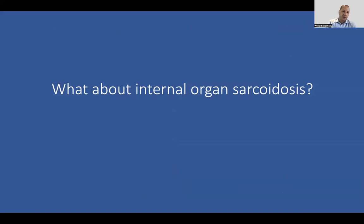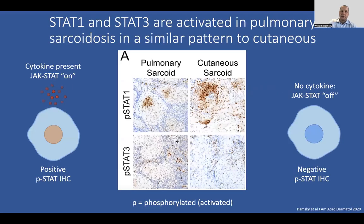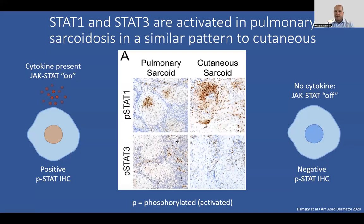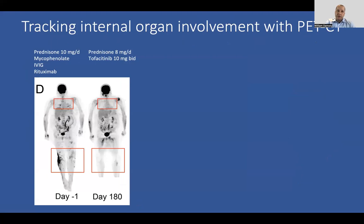At this point, we wondered whether the responses we saw in the skin might also happen in internal organs. We approached that by doing immunohistochemical testing for JAK-STAT signaling pathway activation in tissue. We chose to look at pulmonary sarcoidosis because it's very common. Quite remarkably, we found a very similar pattern of activation — STAT1 phosphorylation in the center of granulomas and STAT3 activation outside the granulomas in areas of lymphoid infiltrate. And so we thought JAK inhibitors could potentially work for internal organ sarcoidosis.